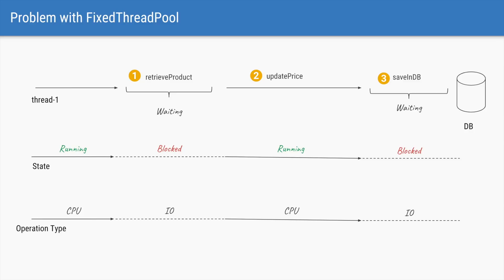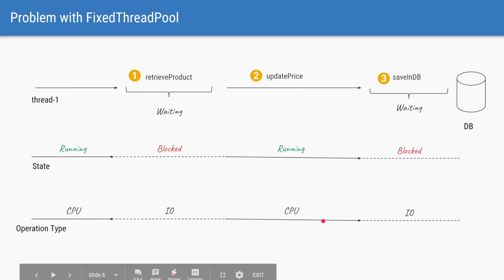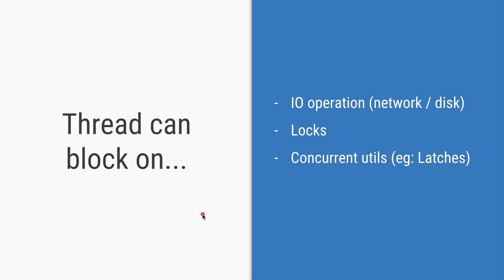When the thread needs to save to the database, it needs to wait for confirmation from the database, so the thread will again go into a blocking state. At step one the thread is blocked, at step two which is CPU-intensive it is running, and at step three again the thread is blocked. Any CPU operation does not require blocking, but any I/O operation will cause the thread to block. The thread can block due to network (the HTTP call), the database (disk), waiting for locks, or concurrent utilities like a CountDownLatch await.